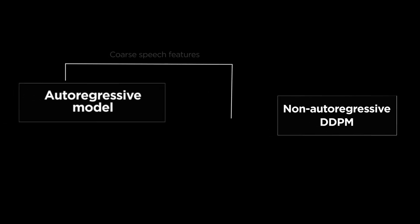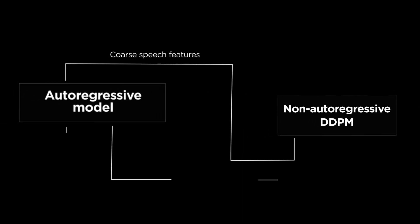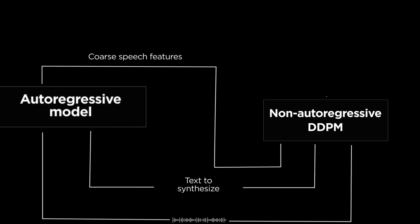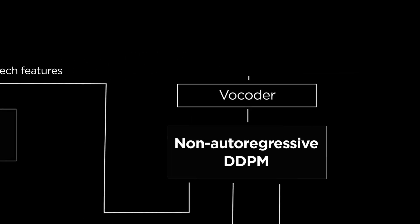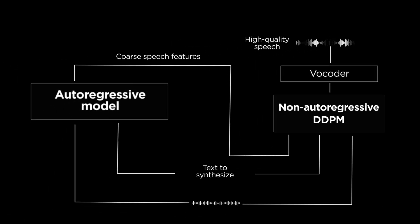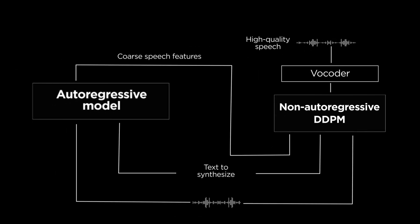Mars 5 combines a Mistral-style autoregressive model with a novel non-autoregressive model to produce speech and audio, capturing emotion, meaning, and performance like never before.